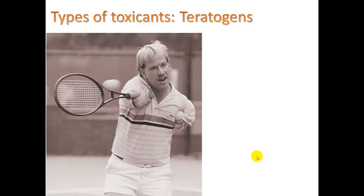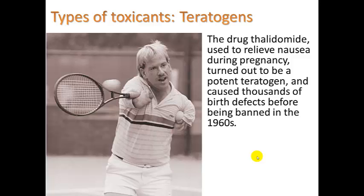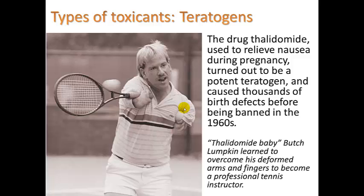The drug thalidomide, used to relieve nausea during pregnancy, turned out to be a potent teratogen and caused thousands of birth defects before being banned in the 1960s. We used these chemicals without knowing they would cause babies to be deformed at birth. They're referred to as flipper babies because their arms are basically non-existent — just a partial hand. Butch Fumpkin, a thalidomide baby, learned to overcome his deformed arms and fingers to become a professional tennis instructor. This is a good case where the precautionary principle would have been helpful.